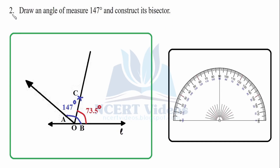Question 2: Draw an angle of measure 147 degrees and construct its bisector. You can use a protractor for this — place it at O and go from 0 all the way up to 147 degrees. Make a line from the origin. Now we have to bisect it — bisect means cutting the angle equally.